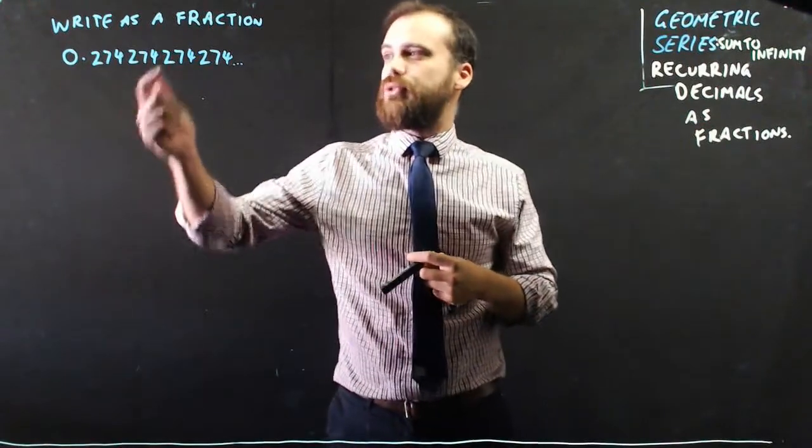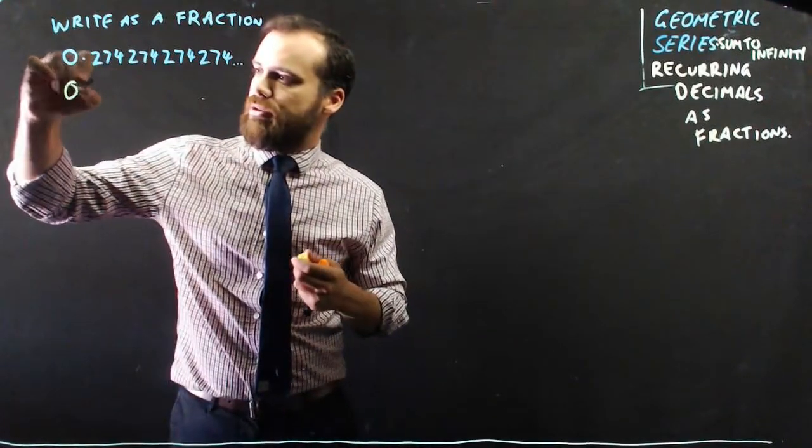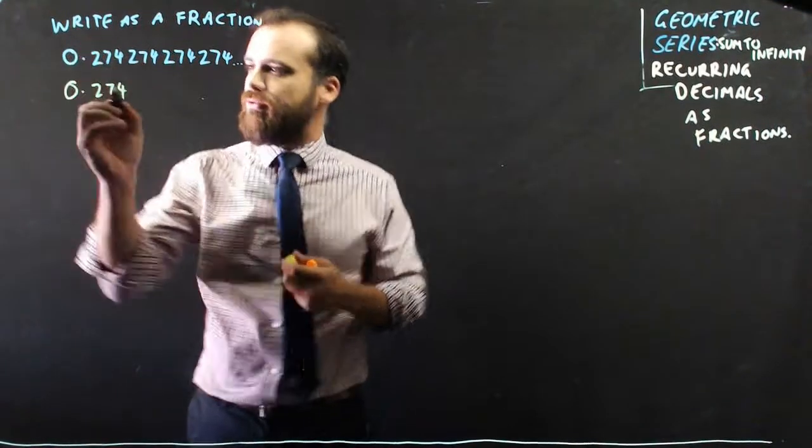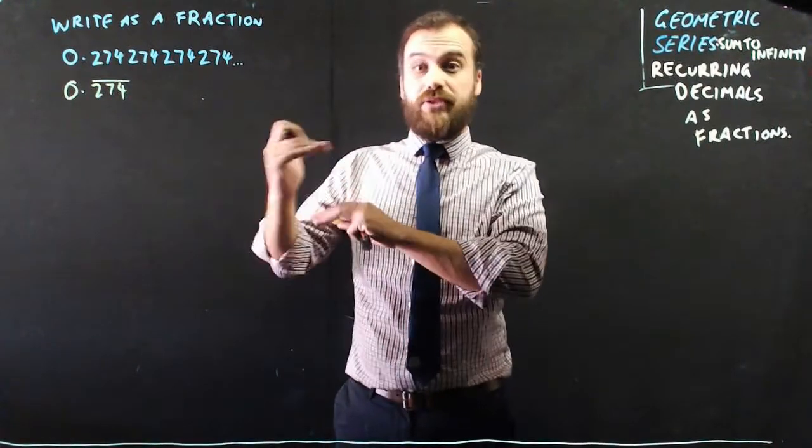So if you had something like 0.274274274, otherwise written as 0.274 with the recurring notation like that, that means recurring decimal. How could we write that as a fraction?